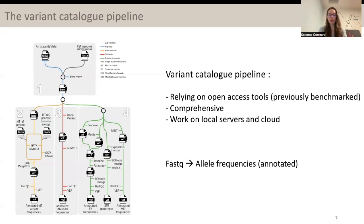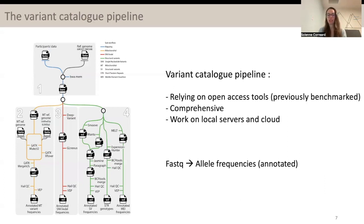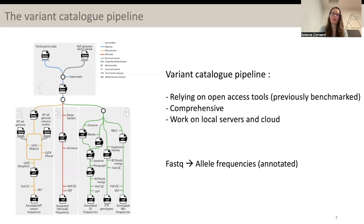All those classes of variants are known to be potentially implicated in rare disease, so it's very important that all of them are present in a variant catalog. And finally, we wanted it to be able to work on local servers or on the cloud, because different projects may have different constraints. And so, we developed the Variant Catalog pipeline that you can see on the left here. This is just an overview, and I'm going to describe each part in more detail.